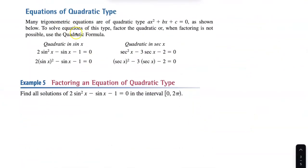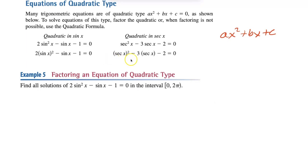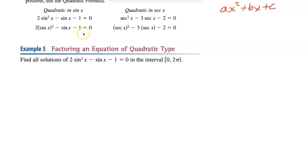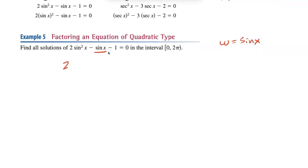Now, equations of quadratic type — they look like ax² + bx + c. Anytime it looks like that, you can factor it just like a normal quadratic. Sometimes it's hard to see with trig functions, so I use a substitution trick: let sine(x) equal w. This is called u-substitution — I just prefer w.